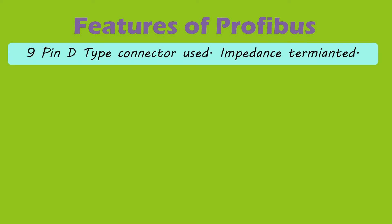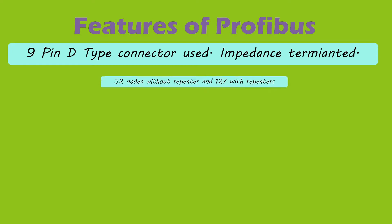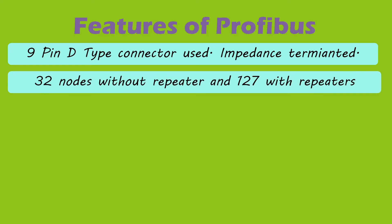Looking at the features of Profibus: Profibus uses a 9-pin D-type connector, which is impedance terminated at the ends. The number of nodes that could be connected on a single Profibus network is 32 without repeaters and 127 with repeaters.